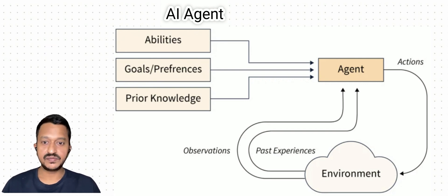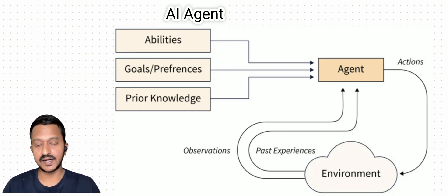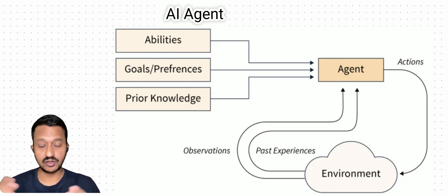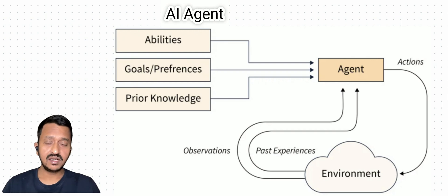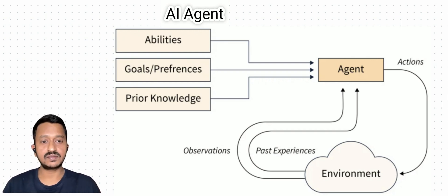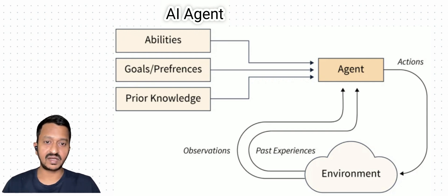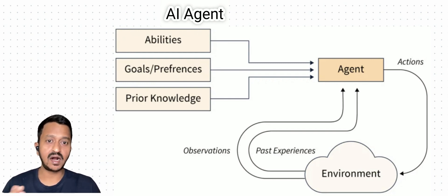We all know that LLMs are just one piece of the puzzle while building robust AI applications. Because these LLMs, large language models, have a knowledge cutoff date, and they usually hallucinate. LLMs alone are not suitable for solving complex problems. You might have a traditional chatbot application that just uses LLMs, but it can't go beyond its capacity — it can't solve very complex user queries.